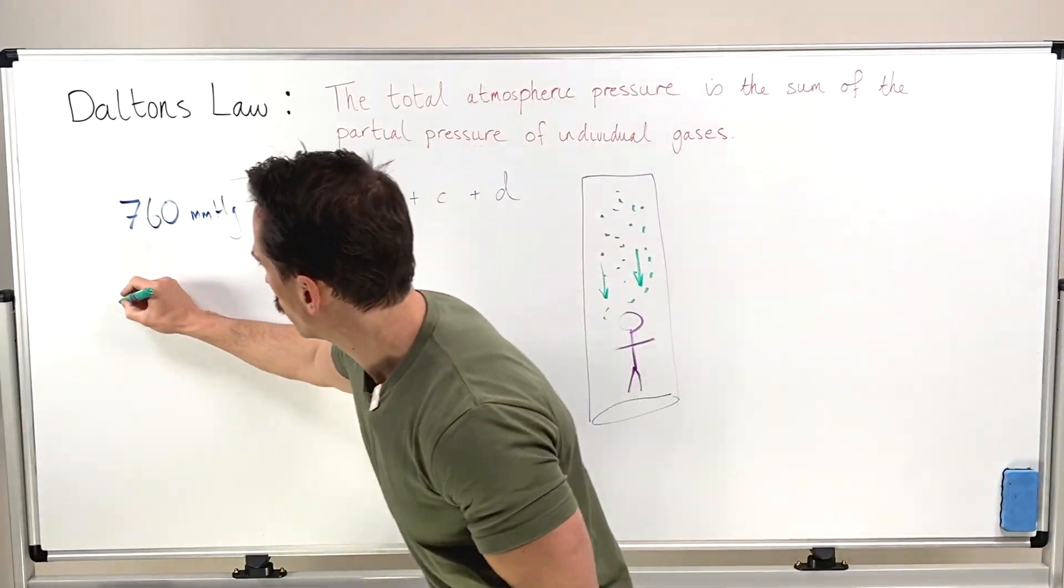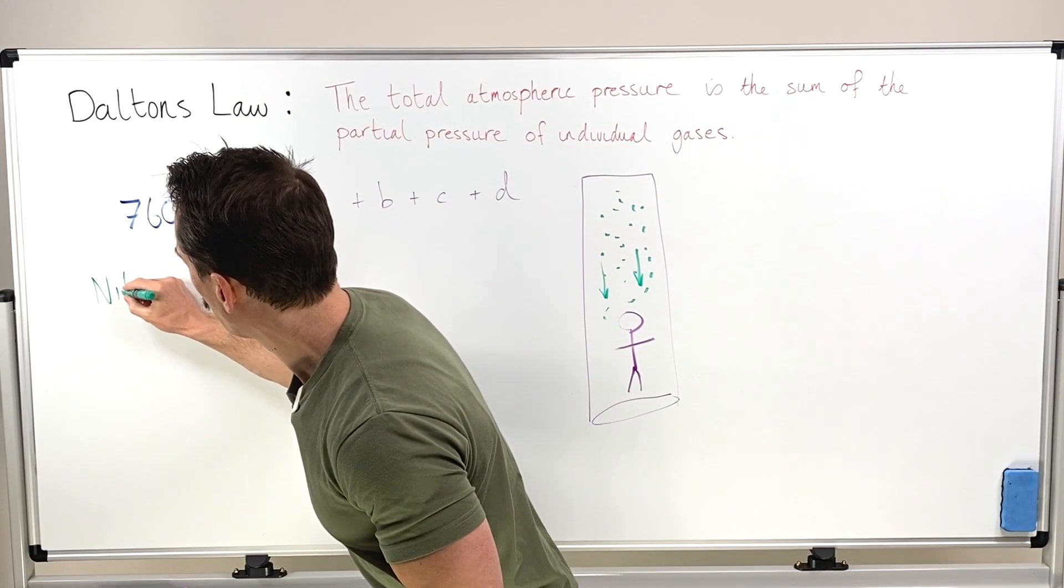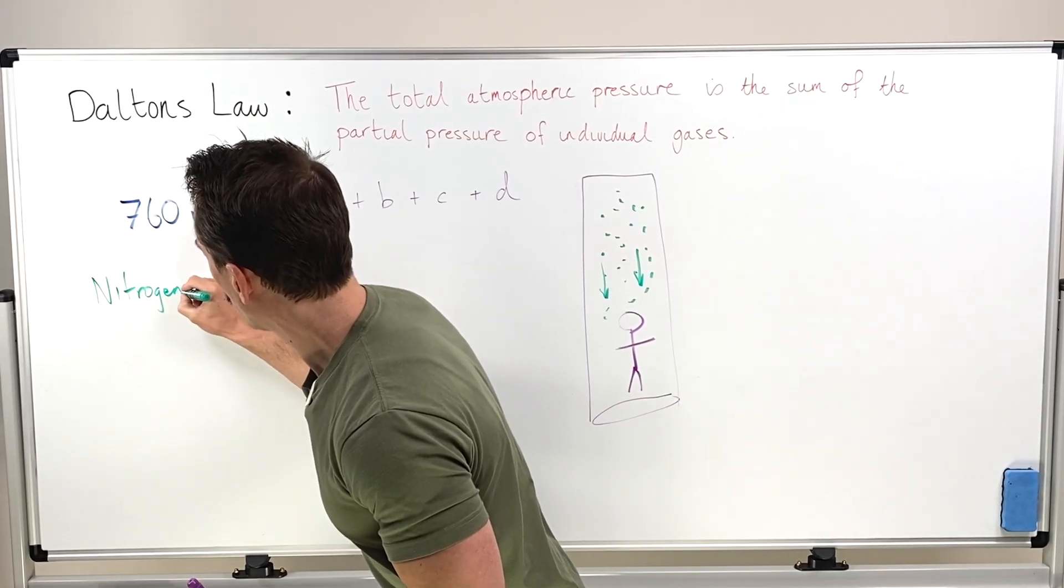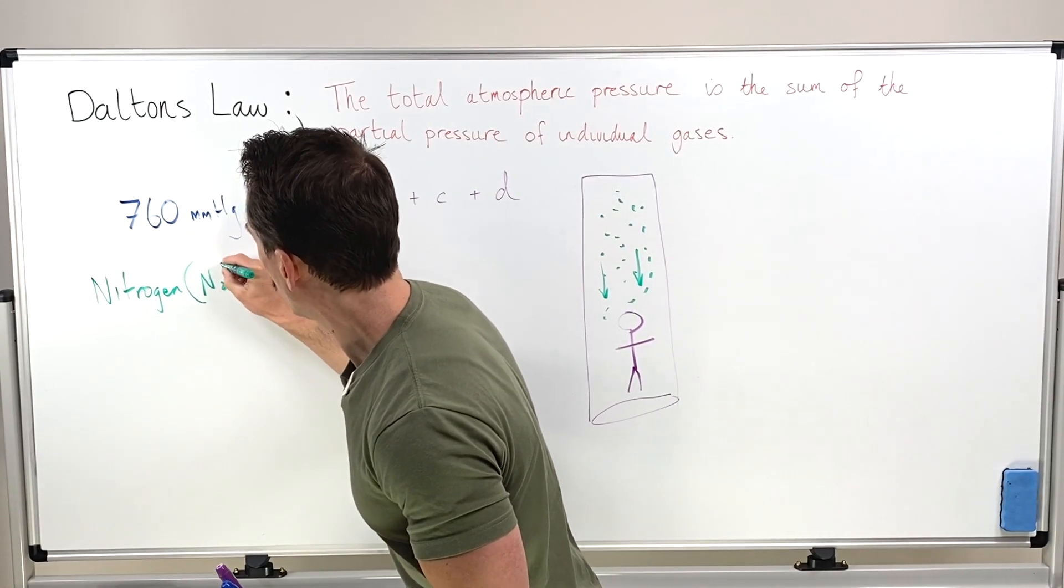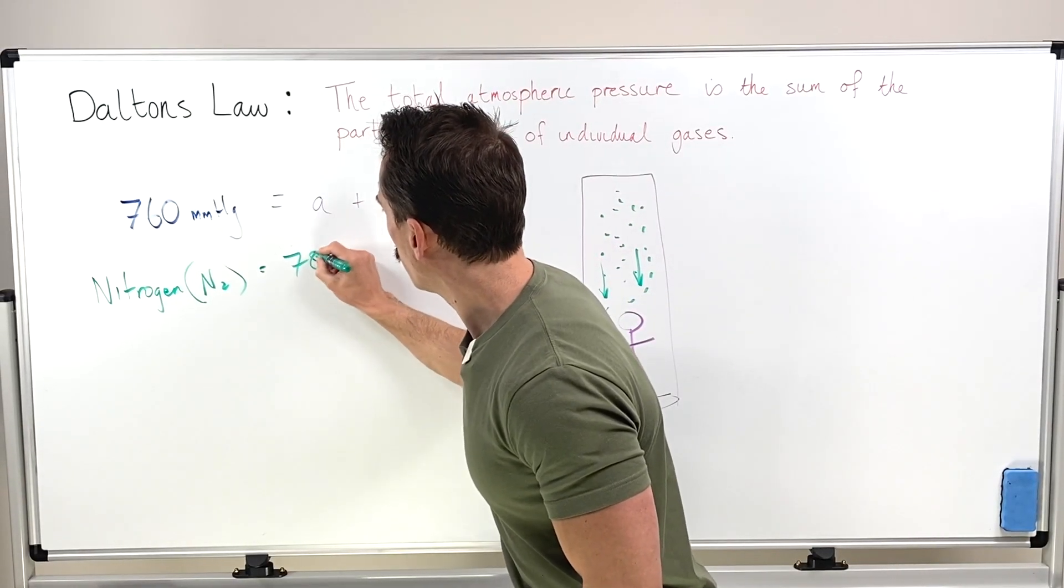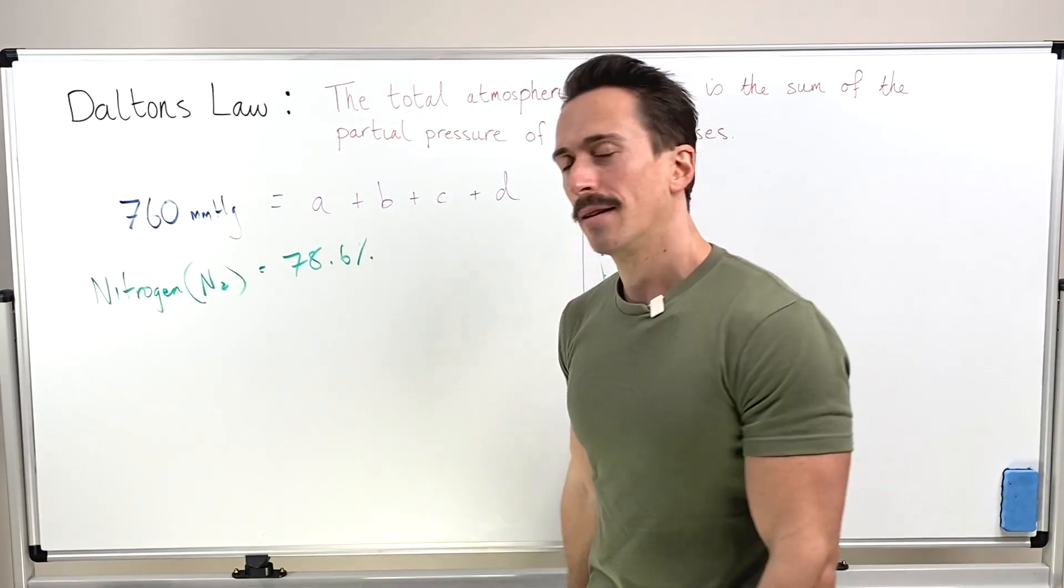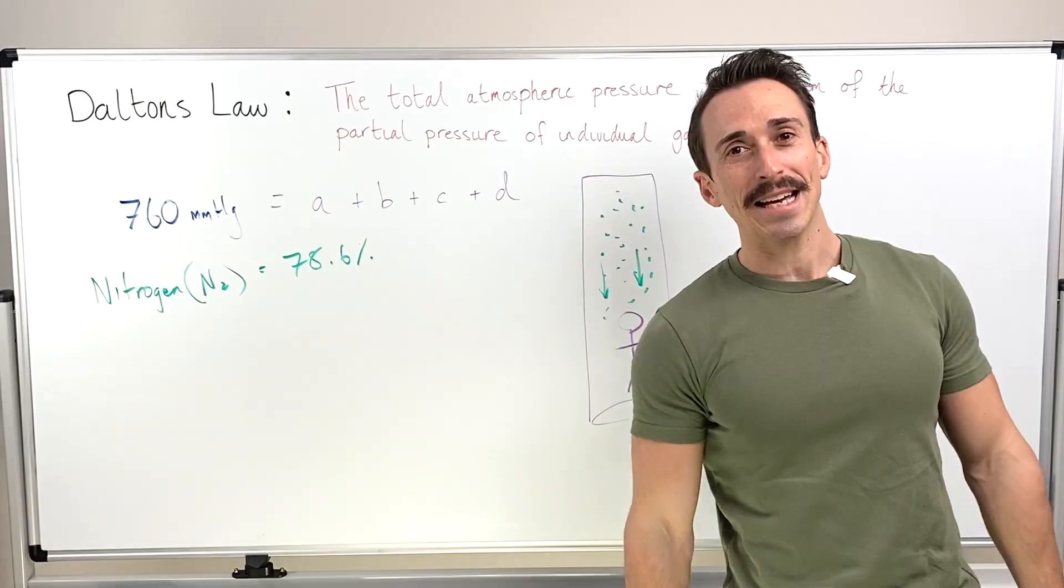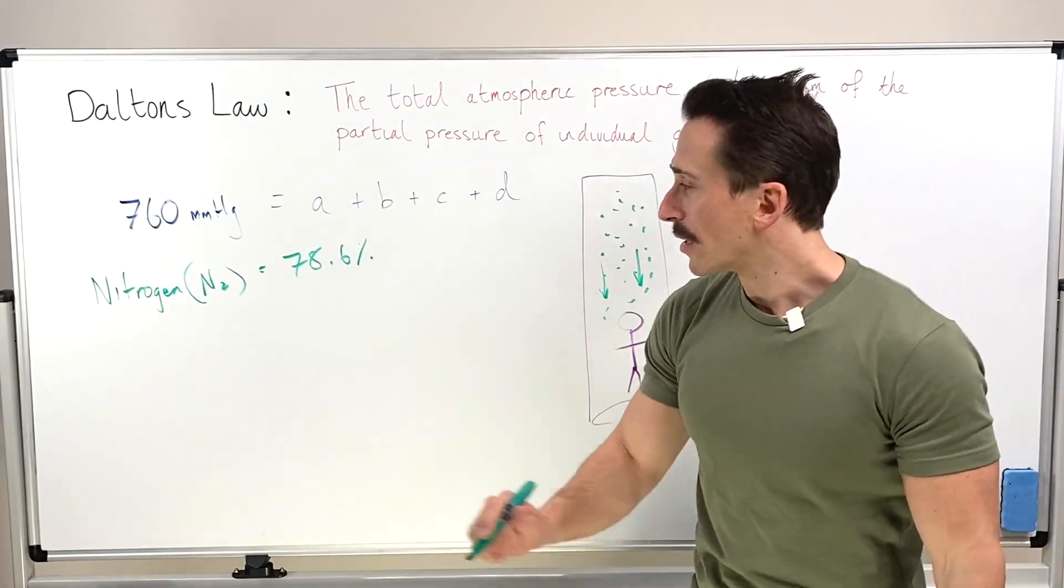That gas is nitrogen, which we can write as N2, and it actually makes up 78.6% of the entire atmospheric gas. That's a fair bit, right?